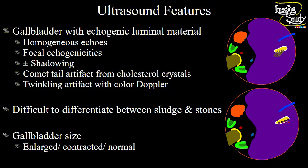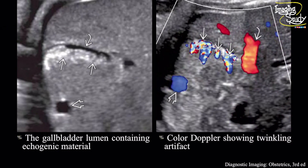Let's check some ultrasound cases. These are collected cases from different sources. I will give the source links in the description box as well as at the end of the video. Here in the first case, we can see a magnified image of the fetal abdomen showing the gallbladder lumen with multiple hyper-echogenic structures within it. You can see the anechoic free part of the lumen. When we put the color Doppler ultrasound, we can see the twinkling artifact posterior to these echogenic materials, indicating the structures are gallstones.